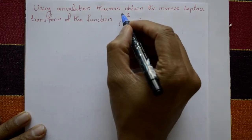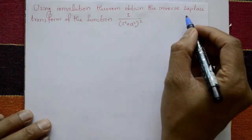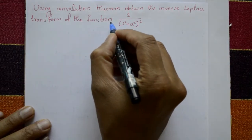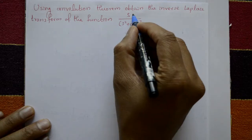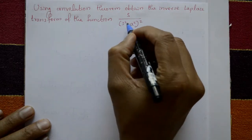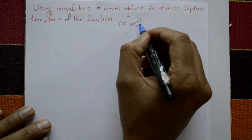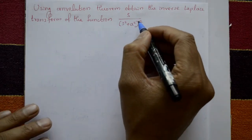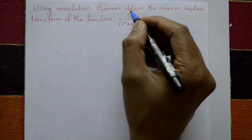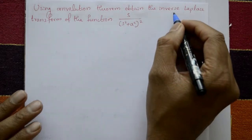Using the convolution theorem, obtain the inverse Laplace transform of the function s/(s²+a²) whole square. Using the convolution theorem, find the inverse Laplace transform.